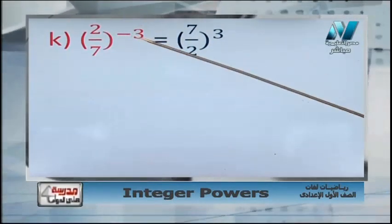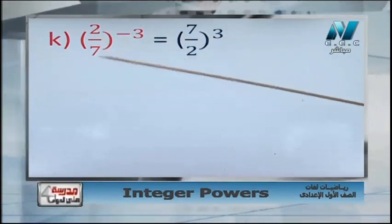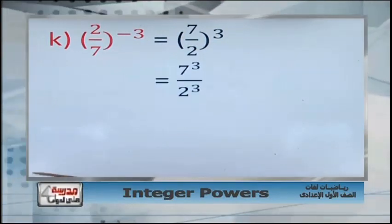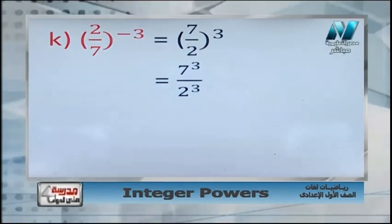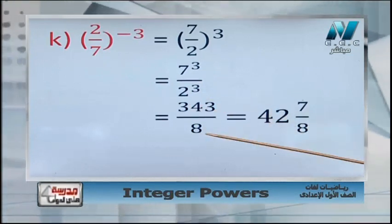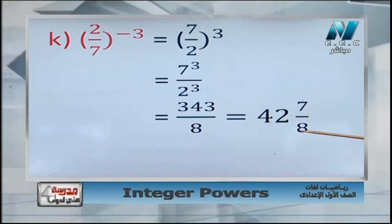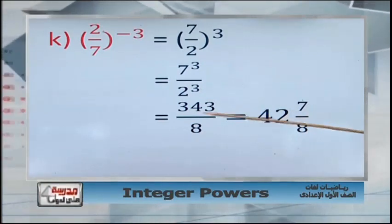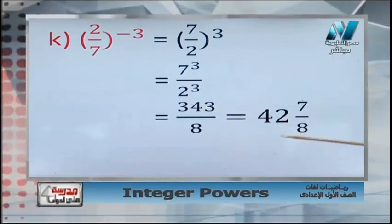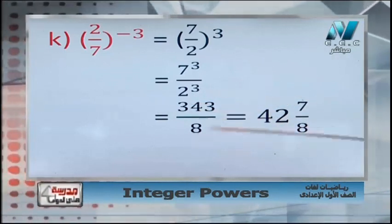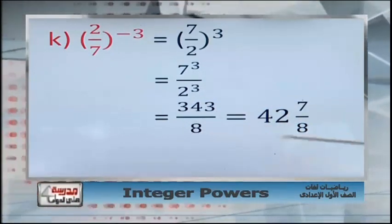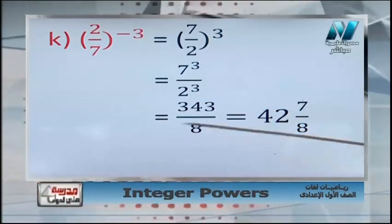The fraction is turned upside down: negative 3 becomes positive 3, and 2 over 7 becomes 7 over 2. Distribute the power: 7 power 3 over 2 power 3, which equals 343 over 8 — as a mixed number, 42 and 7 over 8. On your calculator, write the fraction, press equals, then press Shift SD to convert to a mixed number.